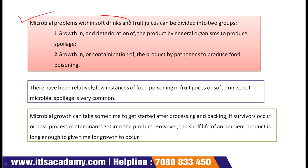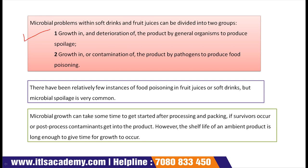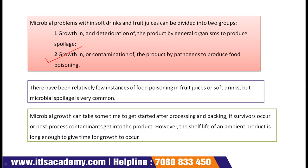Microbial problems within soft drinks and fruit juices can be divided into two groups. Pehla hai: growth in and deterioration of the product by general organisms to produce spoilage — normal microorganisms ki growth ho jaati hai kisi bhi product mein aur ye product ko deteriorate kar dete hain. Doosra group hai: growth in or contamination of the product by pathogens to produce food poisoning — kuch aise pathogens aa jaate hain jo contamination karte hain product ka, saath mein food poisoning bhi cause kar dete hain.